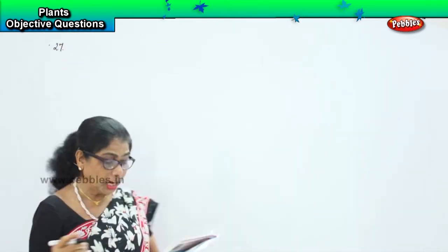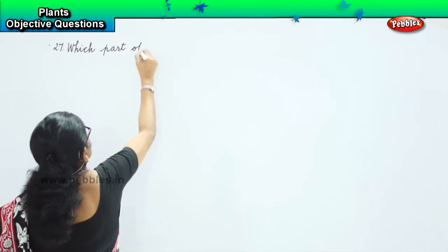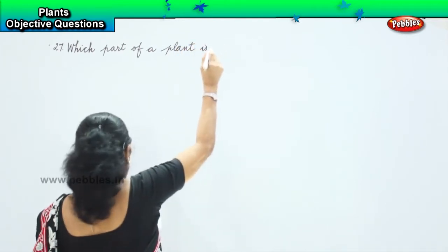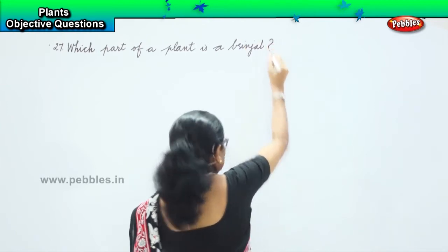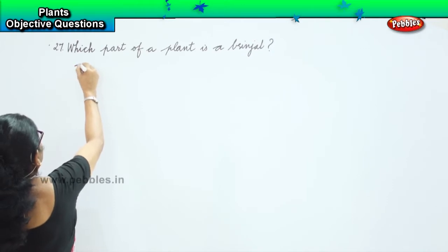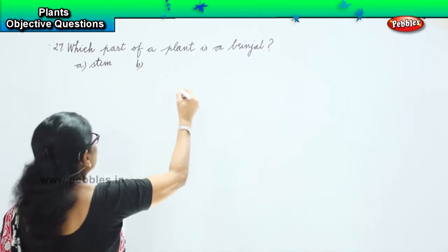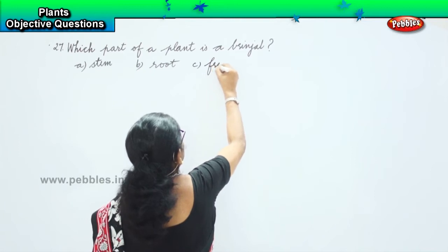Let us look at our twenty-seventh question. Which part of a plant is a brinjal? The options are: A, brinjal is a stem; B, brinjal is a root; C, is brinjal a fruit; D, is brinjal a flower.